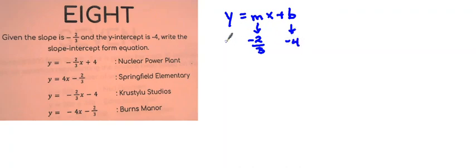So our equation now will read y equals negative 2 thirds x plus negative 4. Well, adding a negative is the same as subtracting its opposite. So we can rewrite this as y equals negative 2 thirds x minus 4.